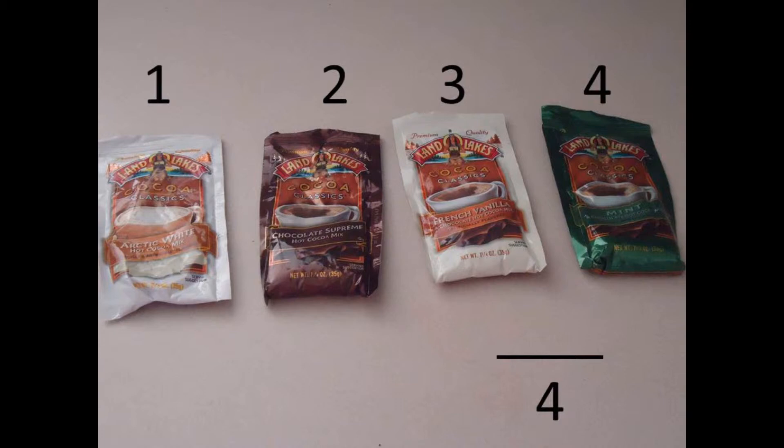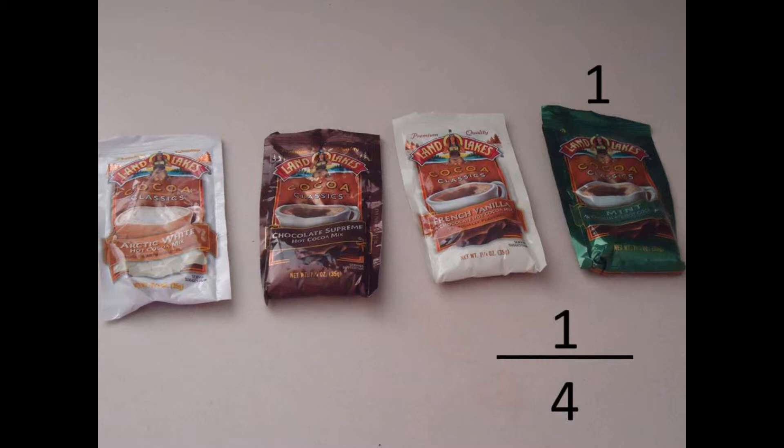Now we need to find the numerator by counting the number of green packages. What is the number going to be? 1! Great job! Remember, the numerator goes on top. So the fraction of hot chocolate packages that are green is 1 fourth.